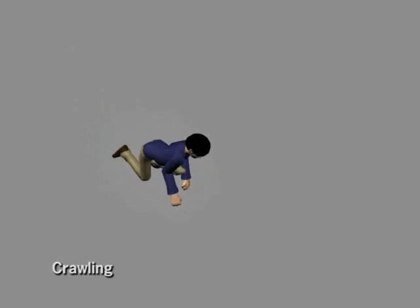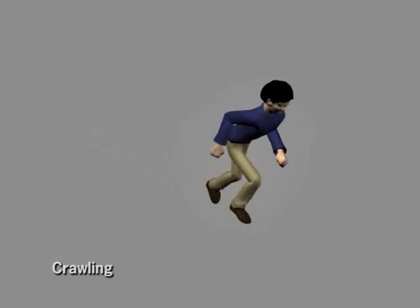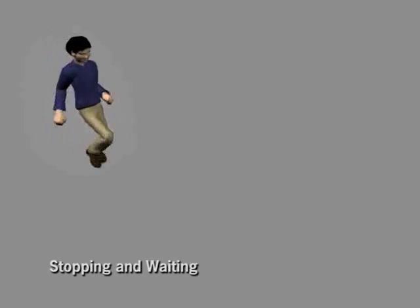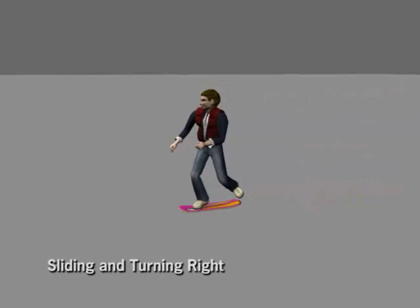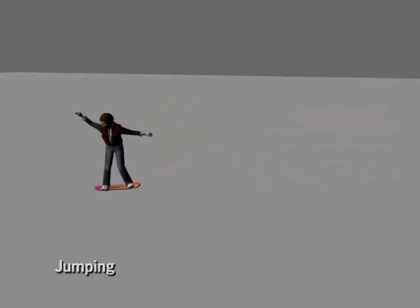We first collect individual clips of motion corresponding to high-level behaviors. Here are examples of clips of motion for an animated human character. Here are examples for a skateboarder. Here are examples for a horse.